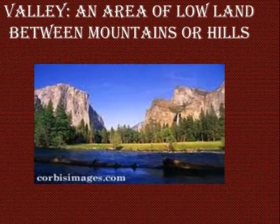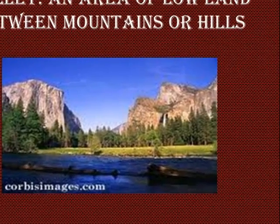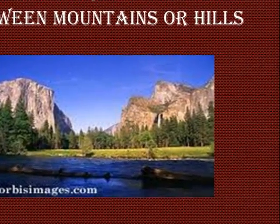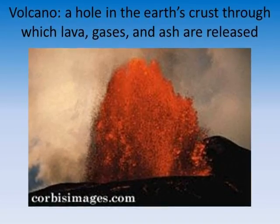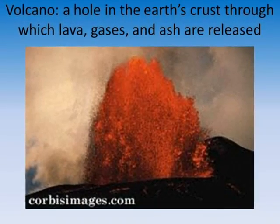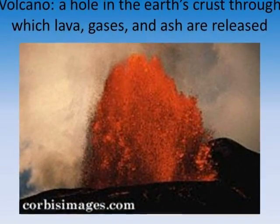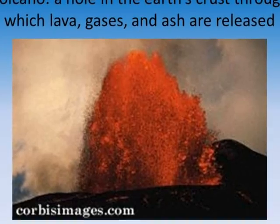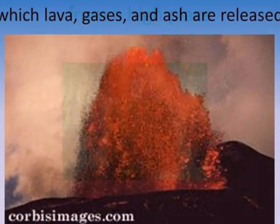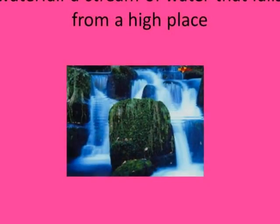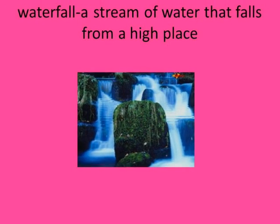A valley is an area of low land between mountains or hills. A volcano is a hole in the earth's crust through which lava, gases, and ash are released. A waterfall is a stream of water that falls from a high place.